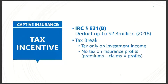Congress has set up a tax incentive for clients to set up their captive insurance company under 831B of the Internal Revenue Code. A business owner can deduct up to $2.3 million this year for 2018, and this will be increased with the cost of living. That is a deduction just like any other insurance premium would be. Under 831B, when the client sets up the captive insurance company, that premium is not treated as income to the captive, and the captive is only taxed on the investment profits generated.